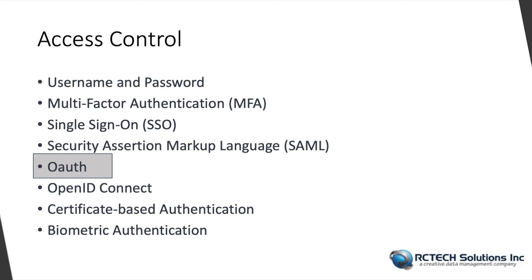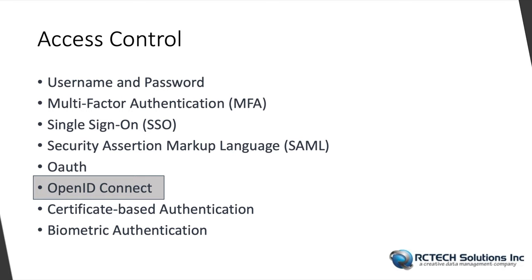OAuth is an open standard for authorization that enables users to grant third-party applications access to their cloud resources without sharing their credentials. OAuth is commonly used to authenticate and authorize interactions between cloud services and mobile or web applications, allowing controlled access to specific cloud services. It provides a secure and scalable authentication mechanism.